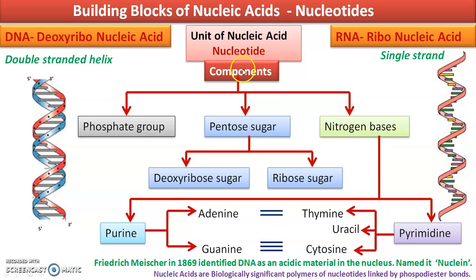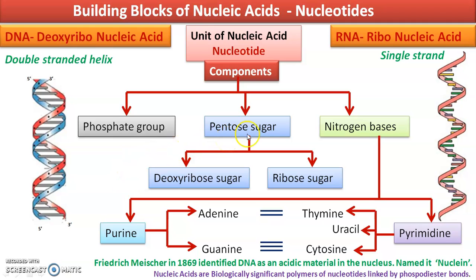Nucleotides are made up of three components: a pentose sugar, a phosphate group, and a nitrogen base. The phosphate group is the same in both DNA and RNA. We will talk about the phosphate group later because it is involved in bond formation. Let us first talk about the main differences between DNA and RNA at the level of the components.